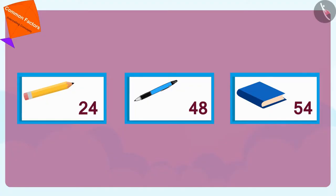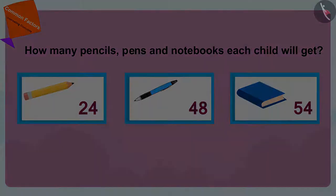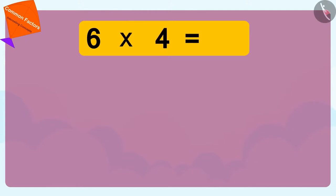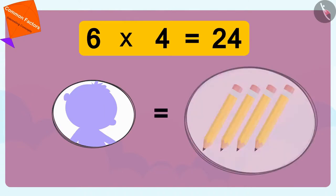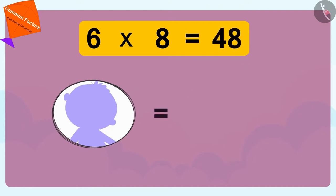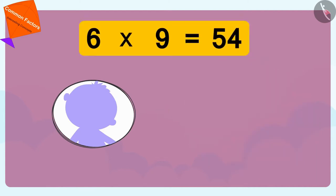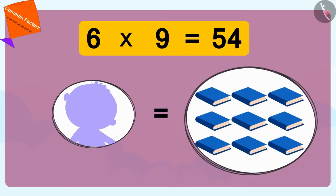Children, can you tell how many pencils, pens and notebooks each child will get? If you want, you can stop the video and find the answer. 6 times 4 is 24, so every child gets 4 pencils. 6 times 8 is 48, so each child gets 8 pens. And 6 times 9 is 54, so every child will get 9 notebooks.